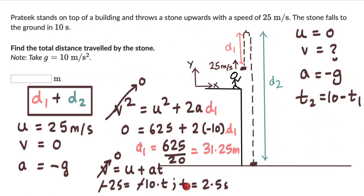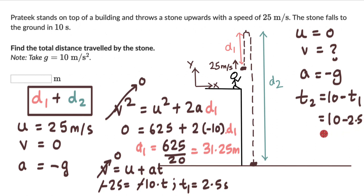The time for the second part, t2, equals 10 minus 2.5, which is 7.5 seconds. So the stone took 7.5 seconds to cover the distance D2. Now we know three variables for the second part, so we can use an equation of motion to find D2.